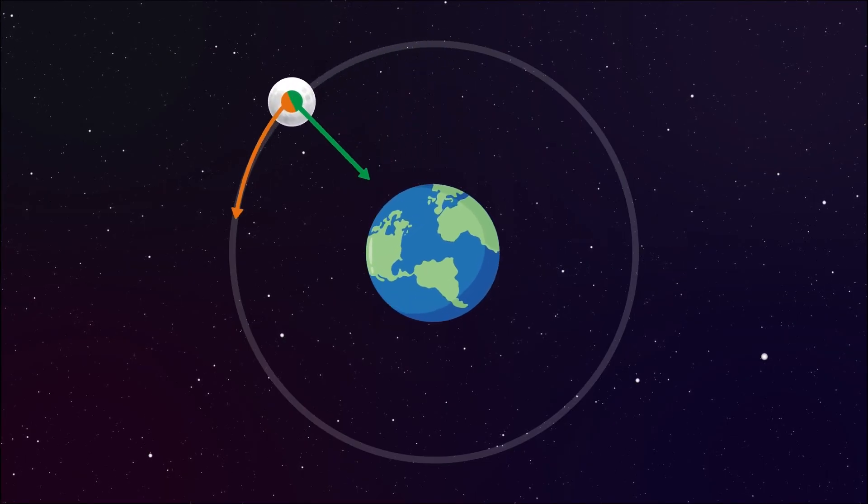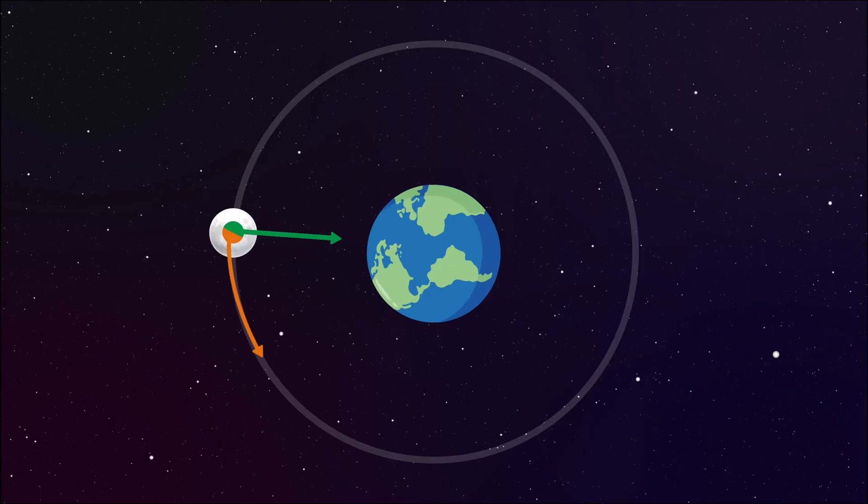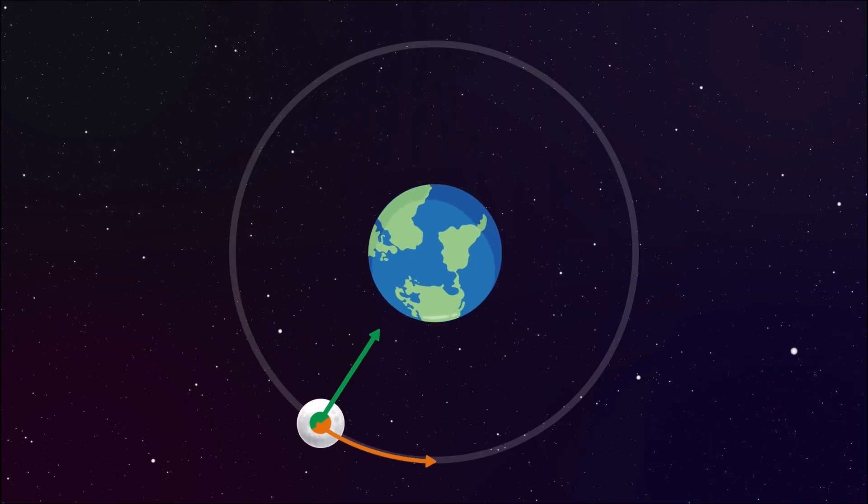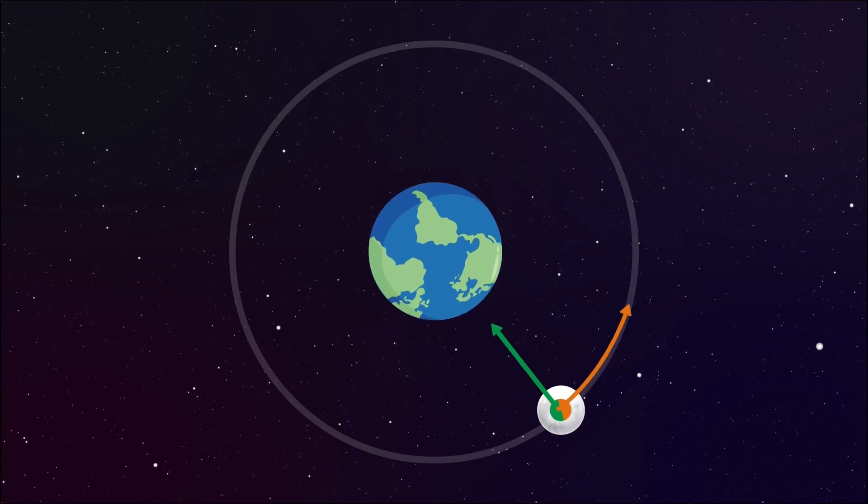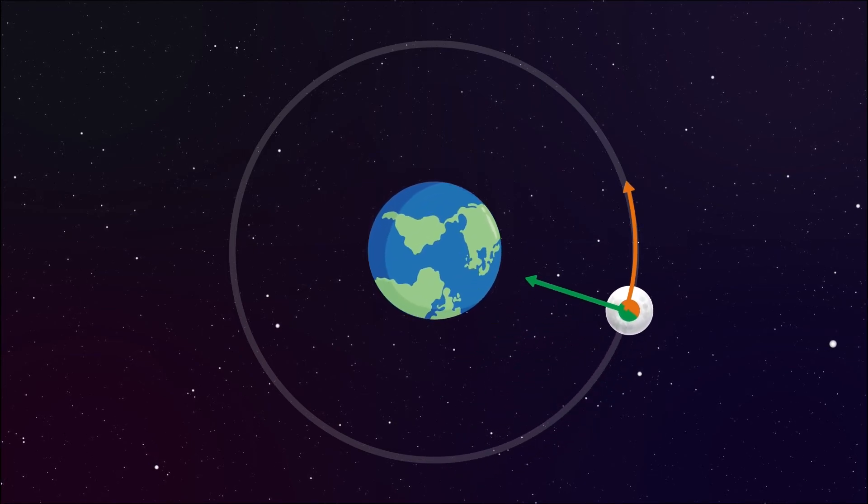So it is the right balance of the forward velocity of the moon and earth's gravity that fixes the moon in its orbit. Without earth's gravity, it would go wandering in the universe, but the force of gravity pulls it. However, the moon has its own forward velocity which makes it move in a circular path around the earth.